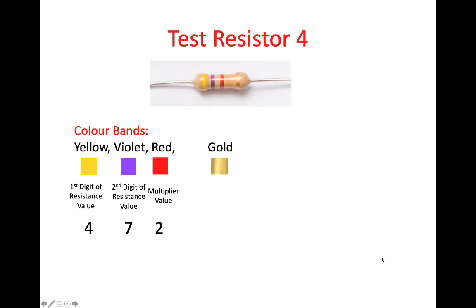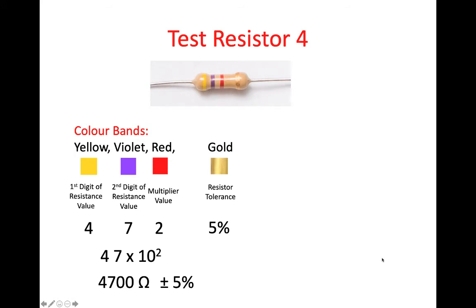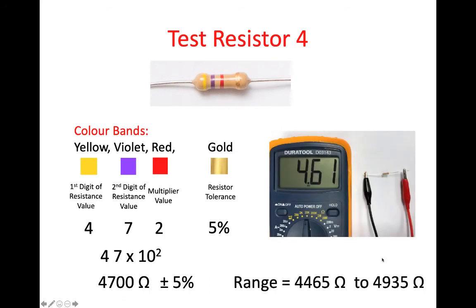Red has a value of 2, which represents the multiplier value. And gold again is plus or minus 5%. So that's 47 multiplied by 10 to the power of 2, plus or minus 5%. That gives us 4.7K, or 4,700 ohms, plus or minus 5%, which in a range will give you 4,465 ohms to 4,935 ohms. We measured this particular resistor as 4.6K, which is within that range, as we'd expect.